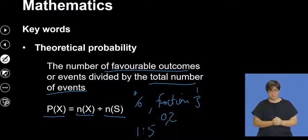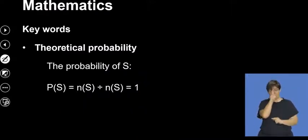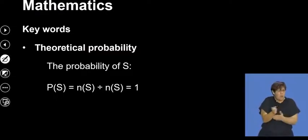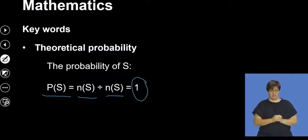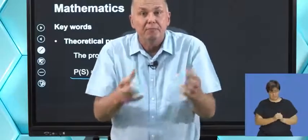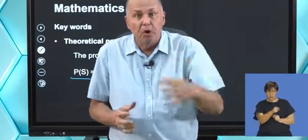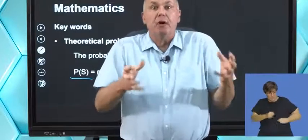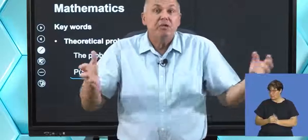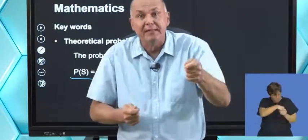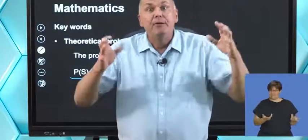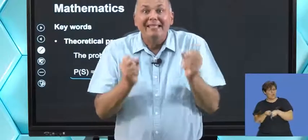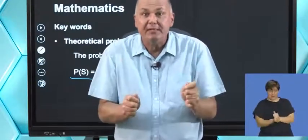There's another key thing to recognize: what's the probability of the sample space? It's the number in the sample space divided by the total number in the sample space, and that comes out to 1. That's a very important rule and conclusion we must remember. If something is certain — if we take something from the sample space — then the total number of things divided by the total number of things is 1. A probability of 1 is 100%, which tells us it's certain.